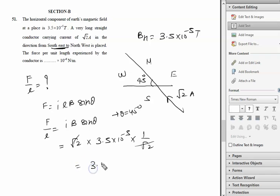It will be 3.5 × 10^-5, but the answer is in 10^-6. So we multiply and divide by 10: 3.5 × 10 equals 35 × 10^-6.